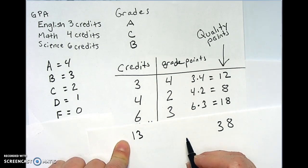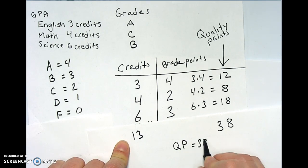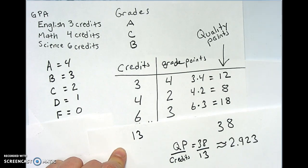So we take our quality points, 38 divided by credits, and then we divide. We could do longhand, but I don't feel like it. We get our 2.923 GPA.